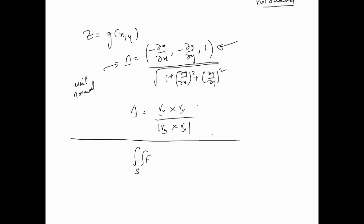The surface integral of a vector field F — also referred to as the flux of F — is written in this notation. To calculate it we write it as the integral of F dot n dS, because integrals need to be reduced to a scalar function. The result is a scalar quantity — not a vector — whether it's a surface area, volume, or surface integral.